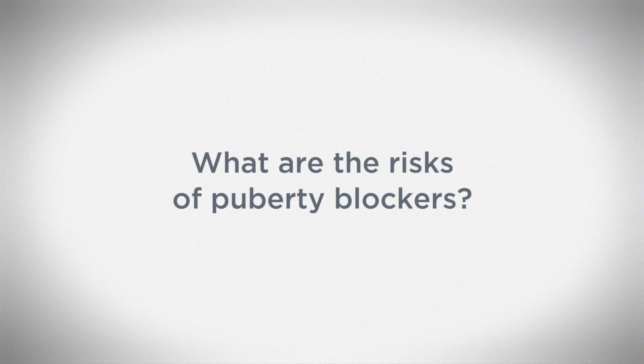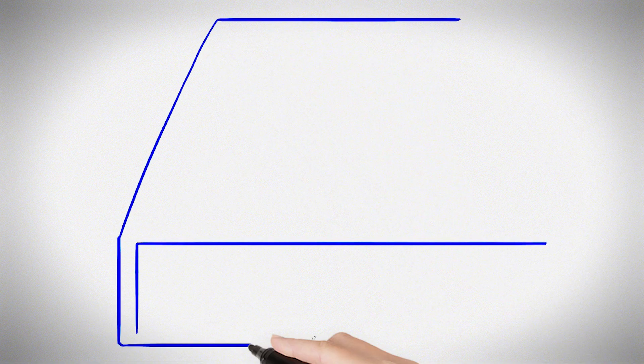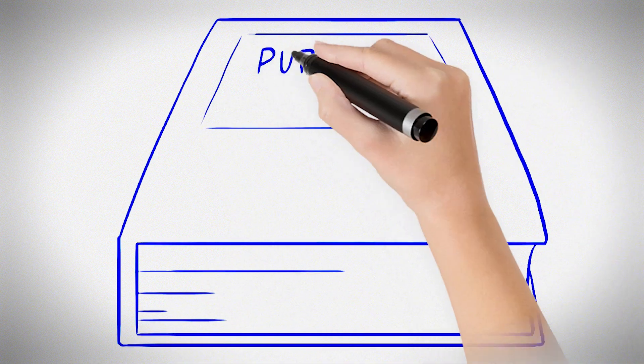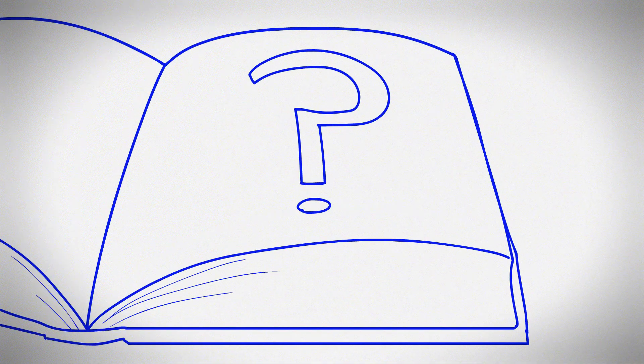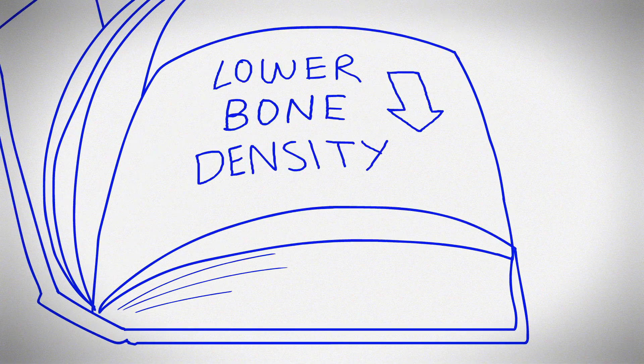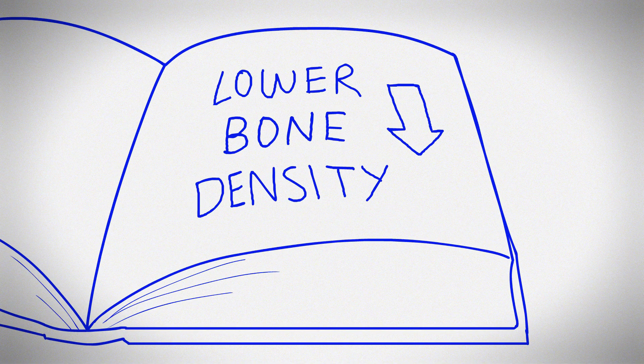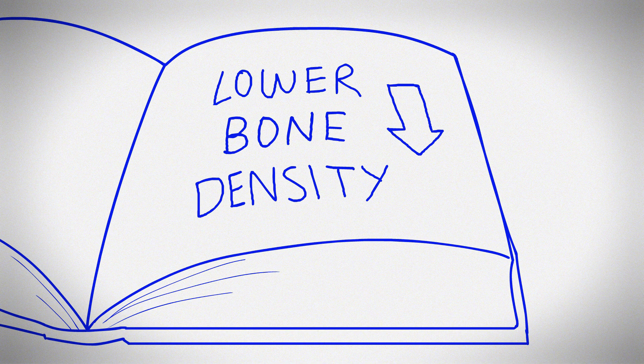What are the risks of puberty blockers? The long-term safety of puberty-blocking medicines is not completely understood. There may be long-term risks that we do not know about yet. Some of the risks we do know about include lower bone density. This means that blocking puberty does not let bones get stronger like people who go through puberty. So your doctor will likely keep a close eye on it.